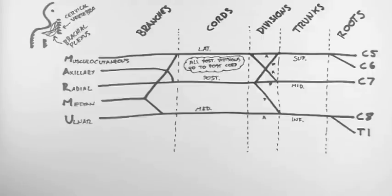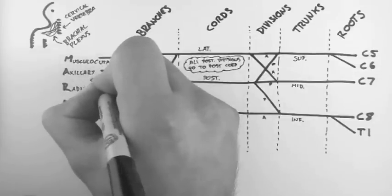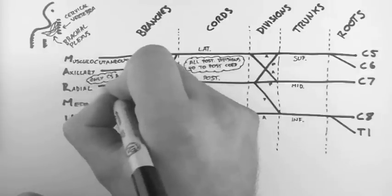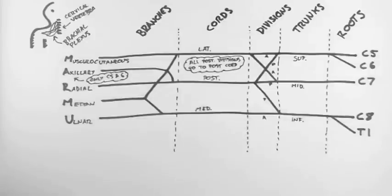So for example, the musculocutaneous branch is a combination of the nerve roots C5, C6 and C7. However, the ulnar branch is a combination of only C8 and T1. Now the only exception to this rule is the axillary nerve or the axillary branch. And it only receives fibres from C5 and C6, not C7 as well as the diagram would suggest. But this is how it looks in dissection.